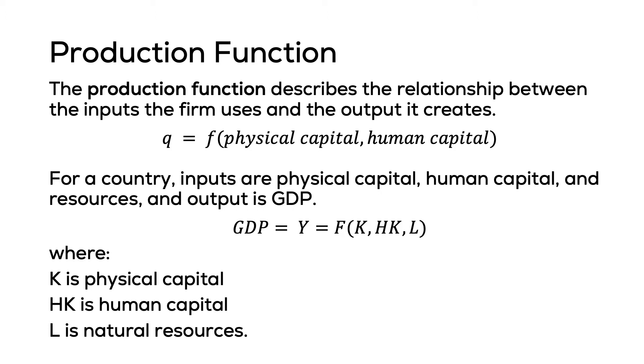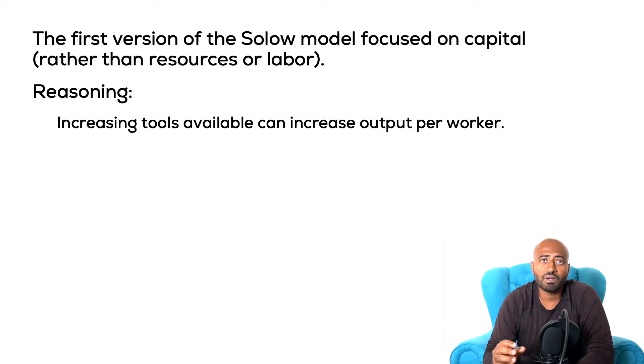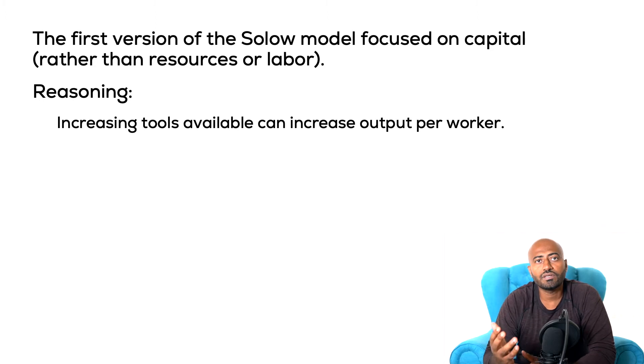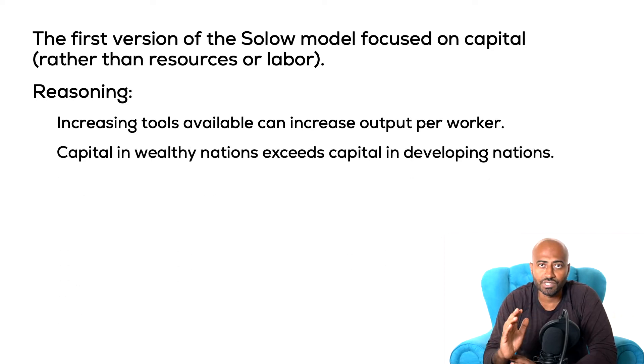The first version of the Solow growth model focused on capital as the reason for growth. Solow believed it is easy to increase the tools available to a country and to increase output per worker. He also recognized, by looking at real-world observations, that capital in wealthy nations exceeds capital in developing nations, and he concluded that capital is the reason why countries vary in their growth rates.